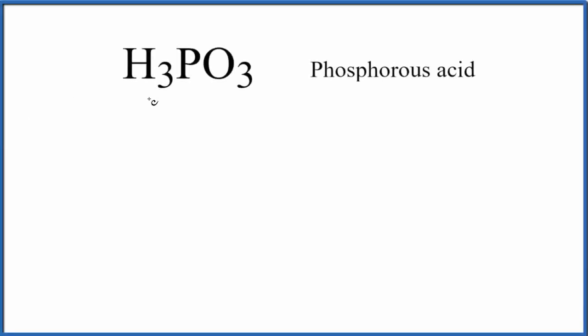In this video we'll write the Lewis structure for H3PO3, phosphorous acid. It's a little bit of a tricky one. First, count the valence electrons - you have 26 total valence electrons for the H3PO3 Lewis structure.